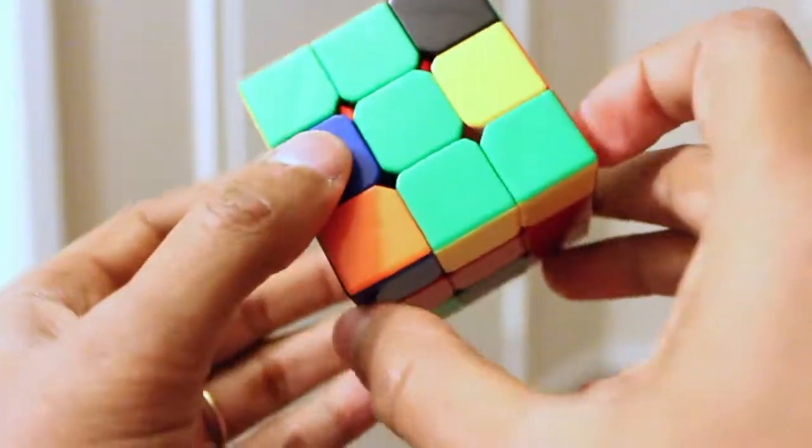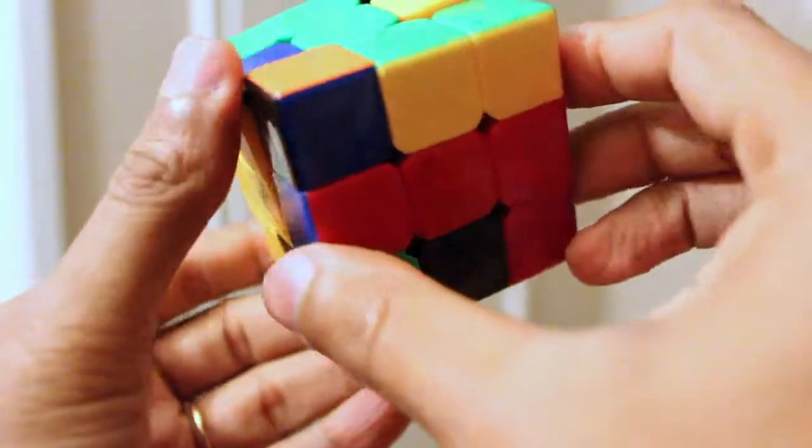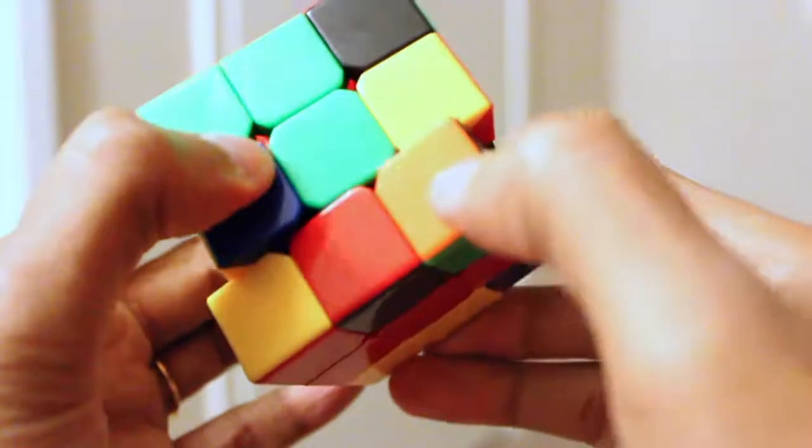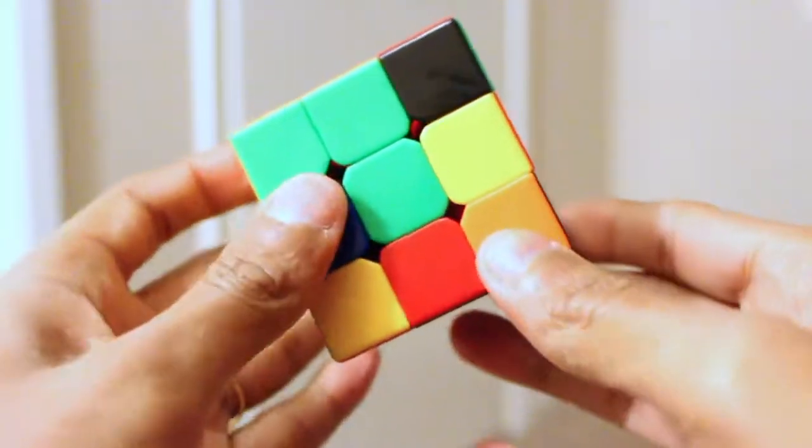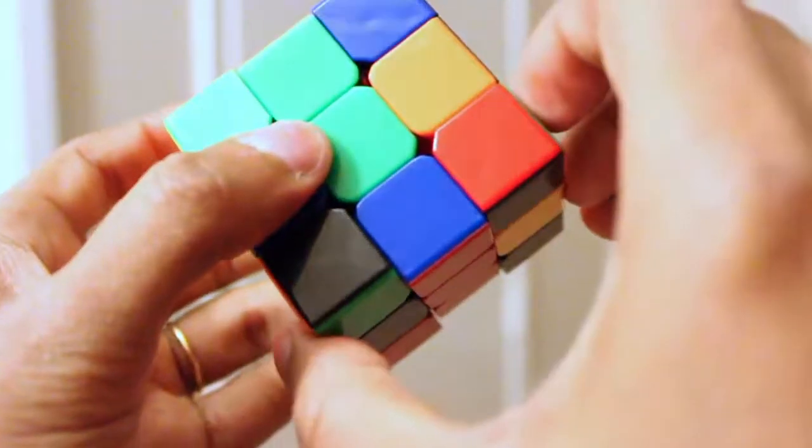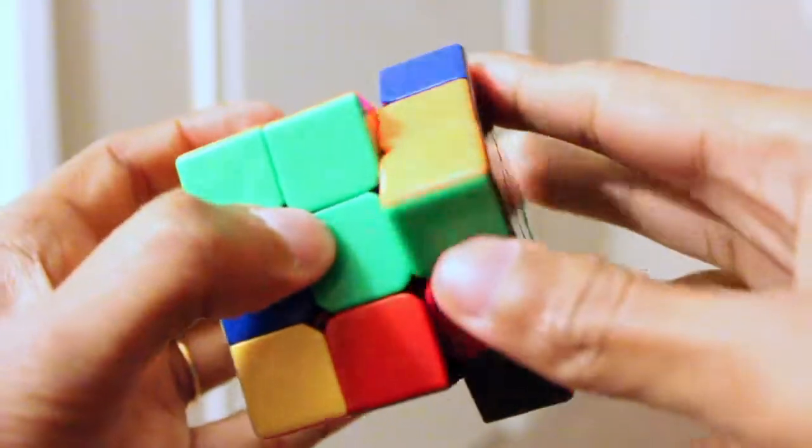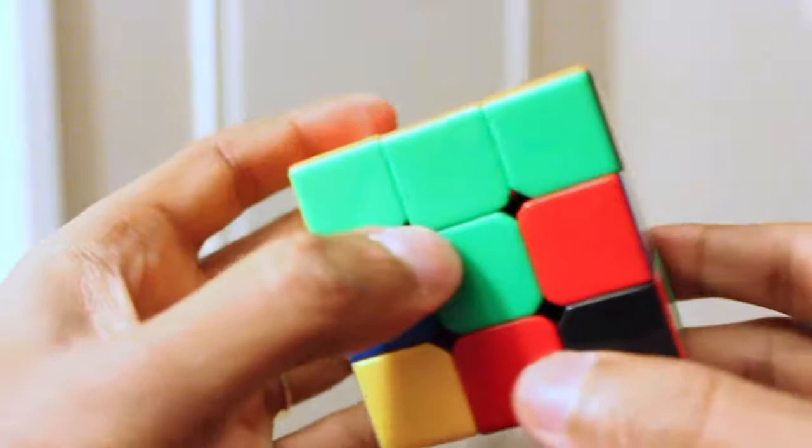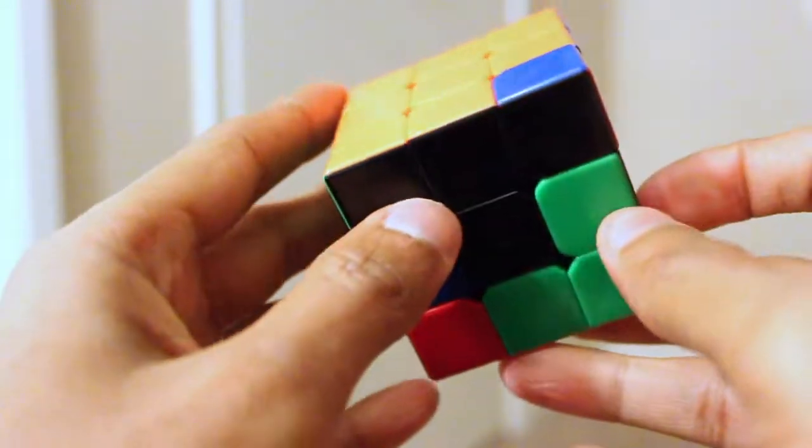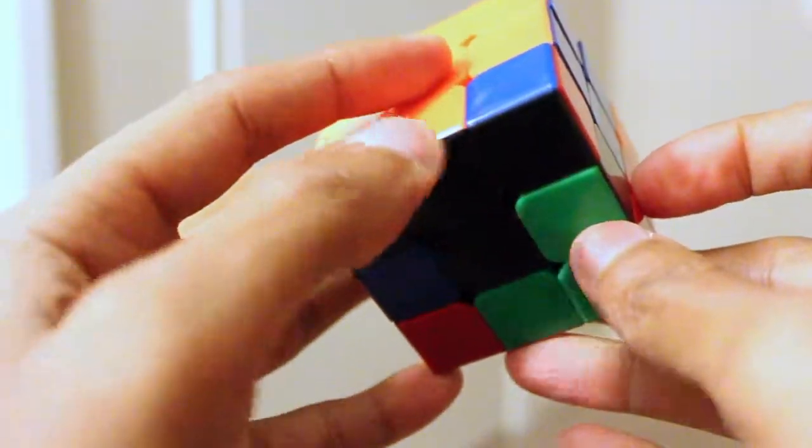Next one: orange, green, black. We have orange, green, black right here. Bring this to the bottom here, move it to the side, bring this down, move it this way, and lift it up. This solves this corner.